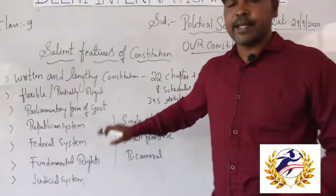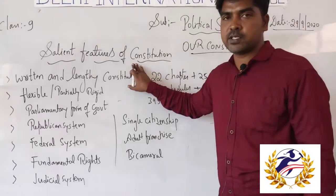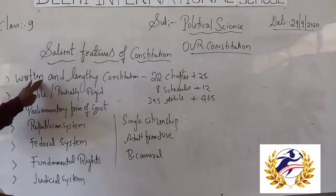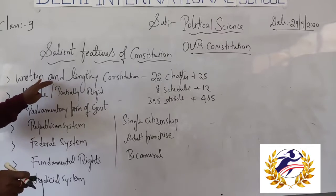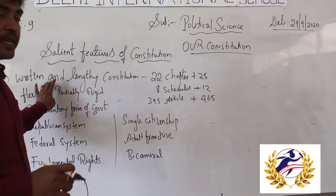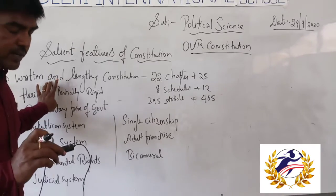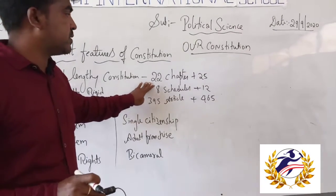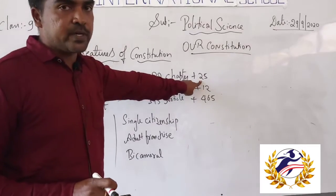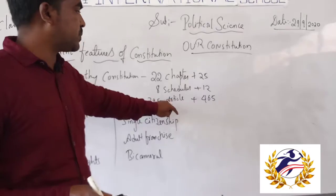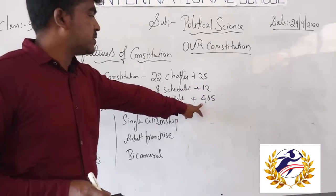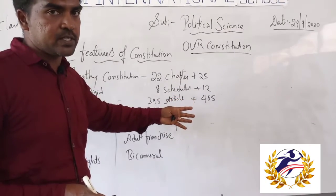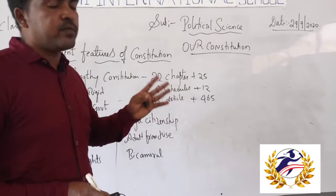The next concept is the salient features of the Indian Constitution. Our Indian Constitution is written and very lengthy compared to other countries. At present our constitution has 25 chapters — previously it was 22 — along with 12 schedules and 465 articles. Each article, schedule, and chapter provides rules and regulations for individuals and the government.